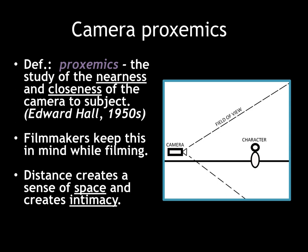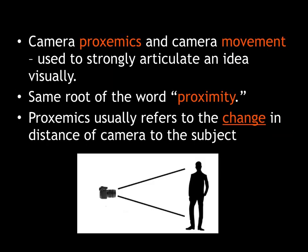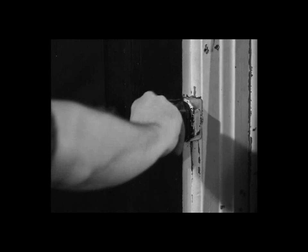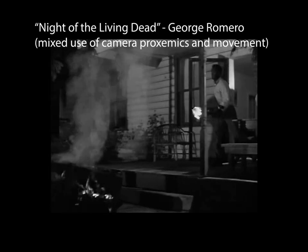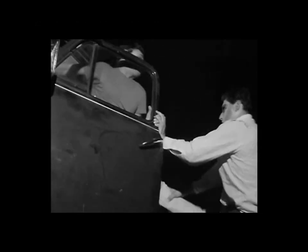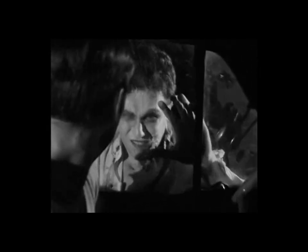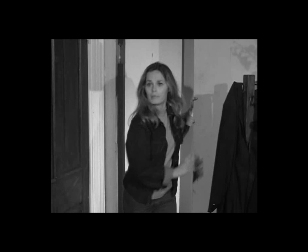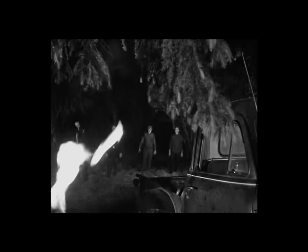In this course, proxemics refers to the change in distance of camera to the subject from shot to shot, or from the beginning to the end of the film. As you watch today's film and subsequent films, ask yourself how proxemics plays into your understanding of the picture — is the cinematographer helping you understand something by moving closer, or moving the camera further away to show the grandness of the background?